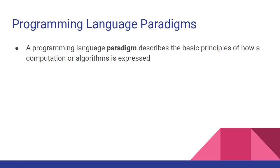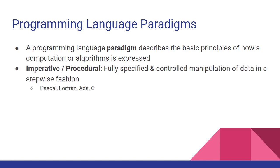We've used the term language paradigm — so what does that mean? When we talk about a language paradigm, we're talking about the basic principles of how a computation or algorithm is expressed. In this course, we'll cover four paradigms, the most common ones. The first is the imperative and procedural paradigm, where you have some data and your program manipulates that data step by step. Pascal, Fortran, Ada, and C are all examples — with C being the one we'll look at in this class.